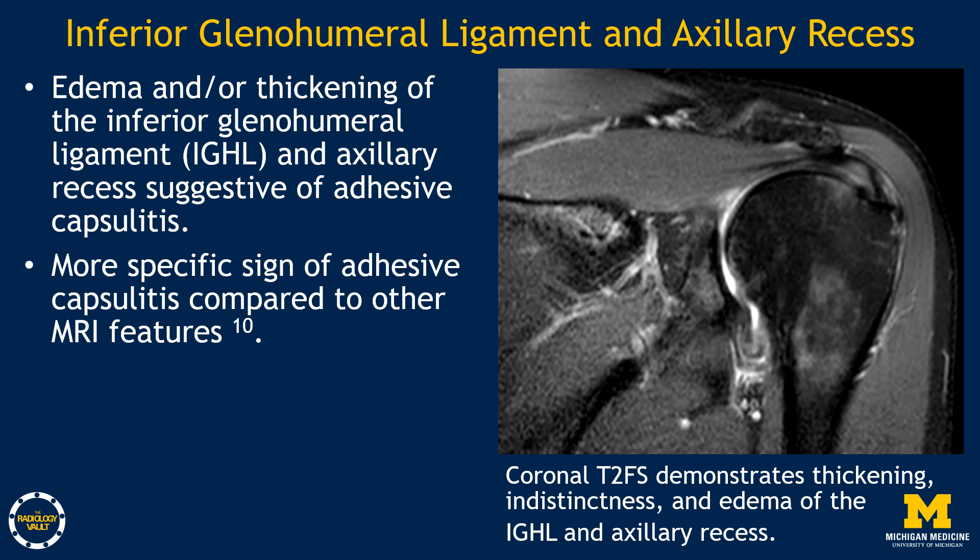One area to look at on the shoulder MRI is the inferior glenohumeral ligament and the axillary recess. If you see edema and/or thickening of the inferior glenohumeral ligament and the axillary recess, this can be suggestive of adhesive capsulitis. Note that this is a more specific sign compared to some of the other MRI features. Here, we have a coronal T2 fat-saturated image demonstrating thickening, indistinctness, and edema of the inferior glenohumeral ligament and the axillary recess as annotated by the arrow.